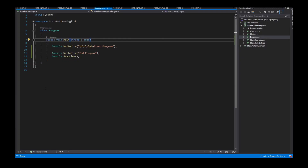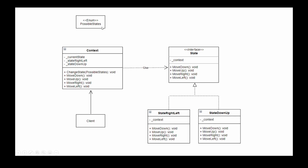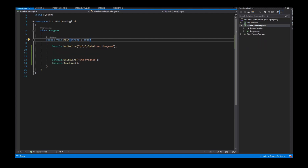Hello and welcome to my tutorial about the State Pattern. The State Pattern needs an interface and the concrete implementations of the interface. These concrete implementations represent a specific state. We also need a context. The context allows us to use the methods provided by every state and is also responsible for changing the state. Now I'll implement this in the source code.